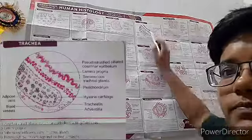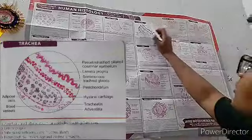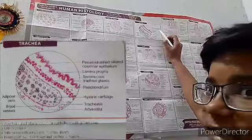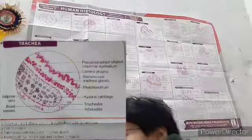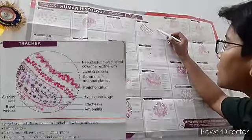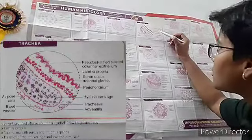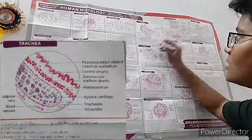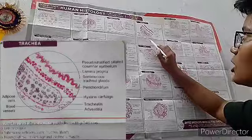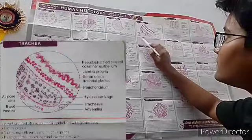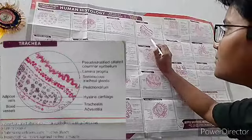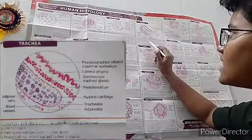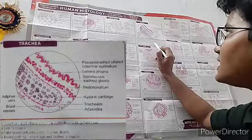Now the trachea. Visible structures include adipose cells, blood vessels, pseudostratified ciliated columnar epithelium, lamina propria, seromucous tracheal glands, perichondrium, hyaline cartilage, and trachealis adventitia. The trachea is lined by pseudostratified ciliated columnar epithelium with goblet cells. The lamina propria and submucosa contain serous and mucous glands. Hyaline cartilage and trachealis muscle are also present.